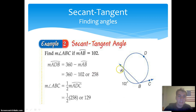So the measure of angle ABC is equal to one half the measure of arc ADB. We substitute in 258, and get one half of 258 equals 129. Therefore, the measure of angle ABC is 129 degrees.